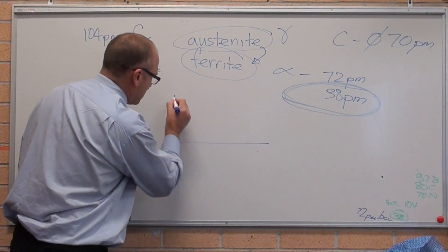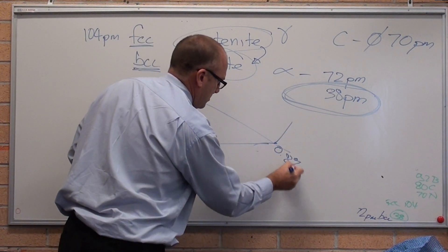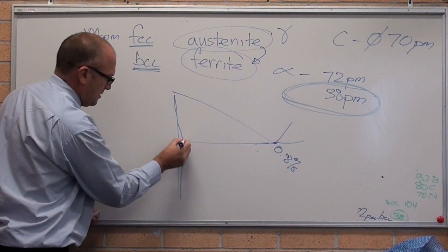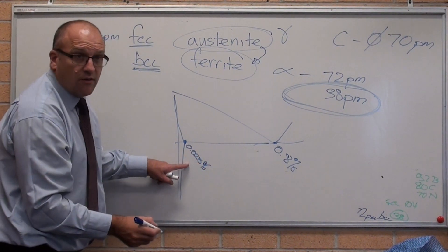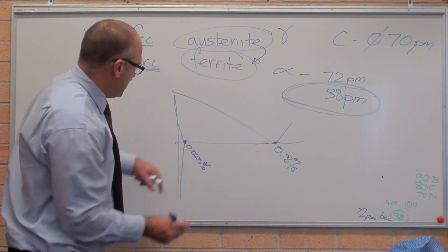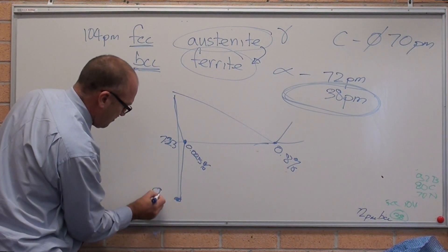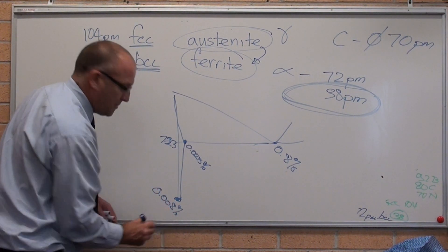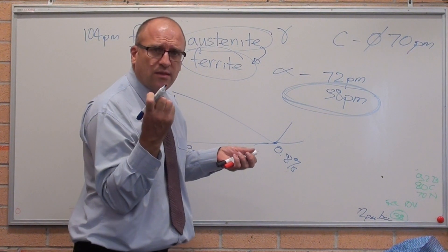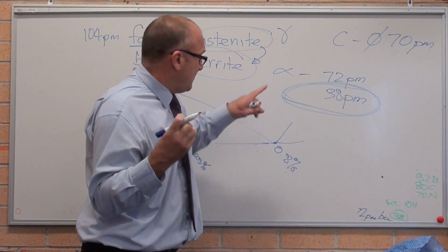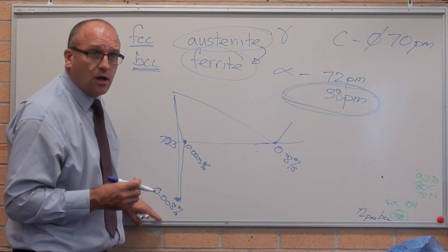So up here, our phase diagram, there's 0.8 somewhere out here. Up here it's 0.025 of a percent. You can hold 0.025 of a percent by weight of carbon at 723 degrees. Down here at room temperature? Absolutely nothing. Because the carbon just can't be held in there because the hole in the lattice is too tight. So that's what's happening with austenite to ferrite transformation. That's why ferrite can't hold the carbon.